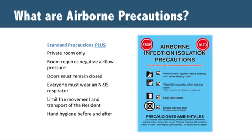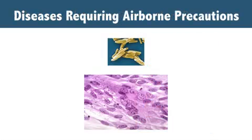Many nursing homes do not have these rooms available. If this is the case, the resident should be transferred to a facility that can manage and provide care for the resident until the condition resolves. In nursing home residents, there are three diseases that require airborne isolation precautions.